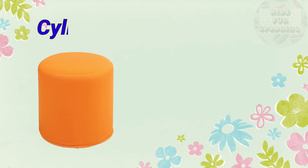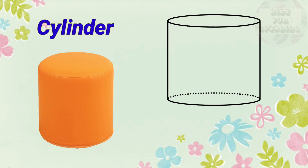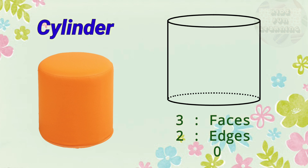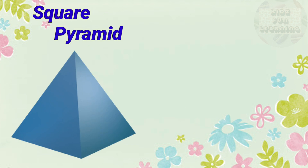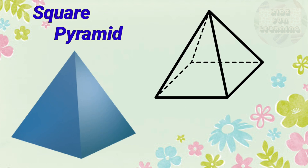Cylinder: 3 faces, 2 edges, 0 vertices. Square Pyramid: 5 vertices.